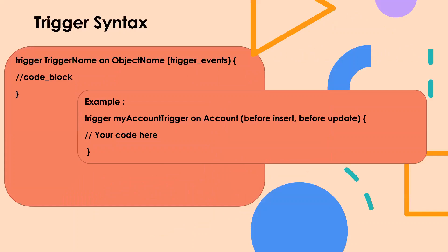So this is the trigger syntax. Here you would write the keyword 'trigger', then you mention your trigger name — this is dynamic, you can mention whatever name you want. Then you include the keyword 'on' and then you mention the object name. For example, if I want to create a trigger on the account object, I would write something like: trigger, then the trigger name — whatever makes sense to me — then the keyword 'on', and then the object name 'account'. And here you mention the trigger events.